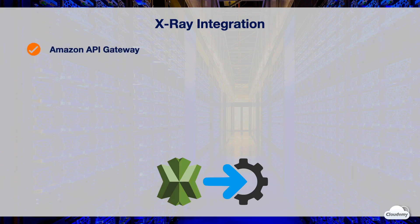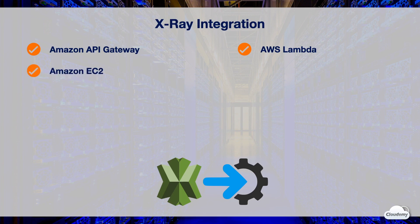AWS X-Ray is integrated with many AWS services. X-Ray works with Amazon API Gateway — you can use X-Ray to trace and analyze user requests as they travel through your APIs to the underlying services. You can also use AWS X-Ray to trace your AWS Lambda functions; Lambda runs the X-Ray daemon and records details about the function invocation and execution. Additionally, you can install and run the X-Ray daemon on EC2 instances to upload trace data to X-Ray.